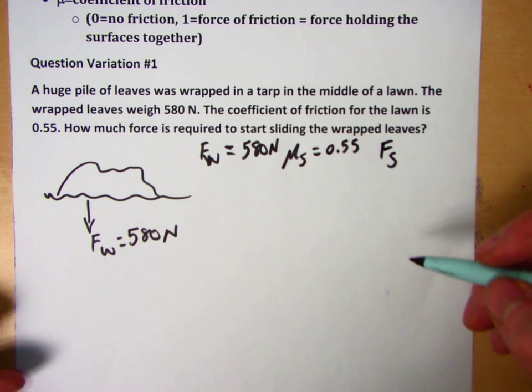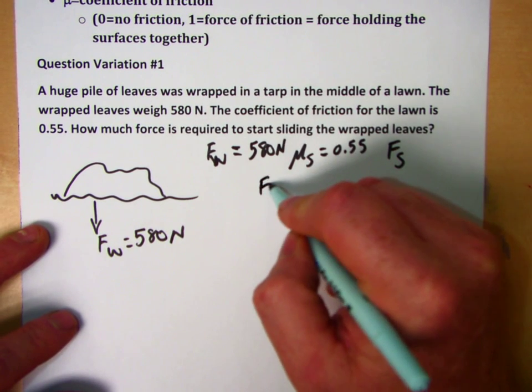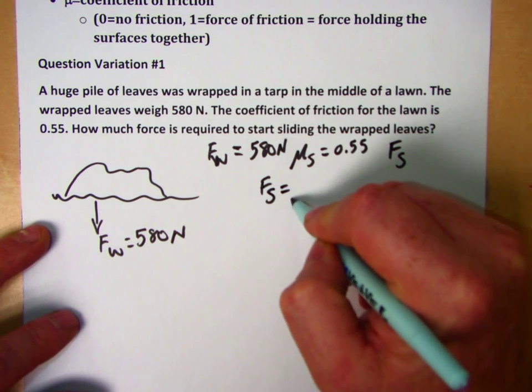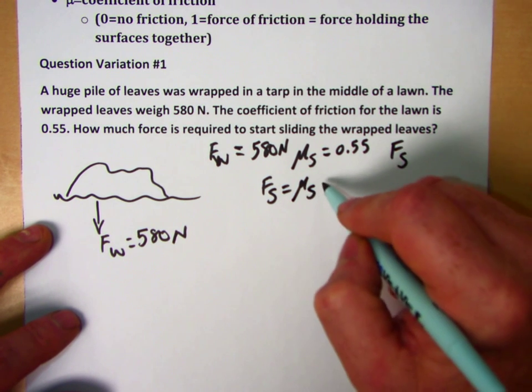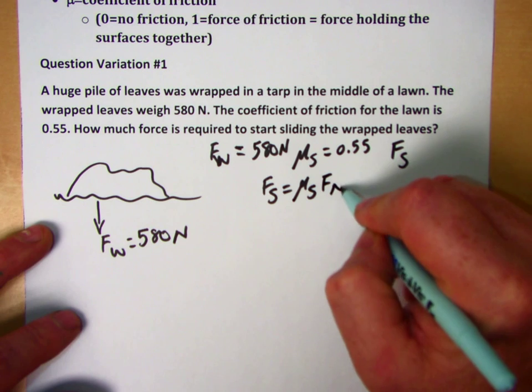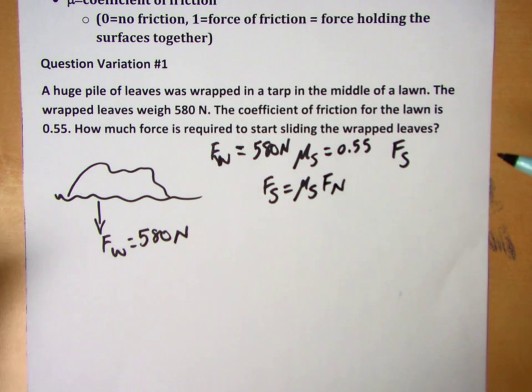Alright, so let's look at our picture. Because if we look at the formula, there's only one formula. Our formula is force of static friction is equal to mu s, the coefficient of static friction, times the normal force. We weren't given the normal force. But if you draw a picture, remember our free body diagrams.